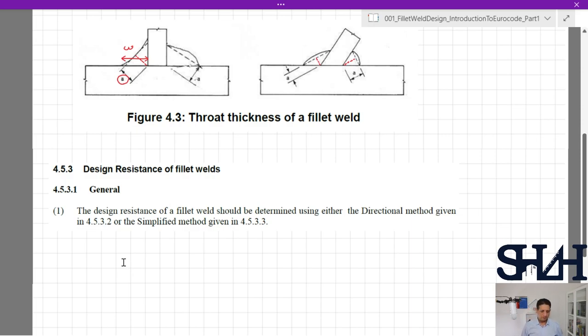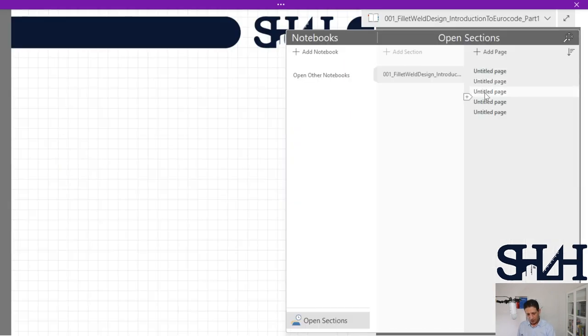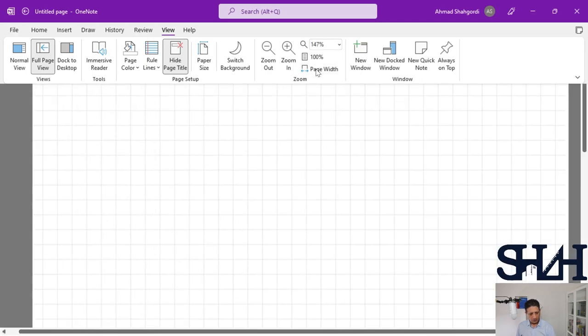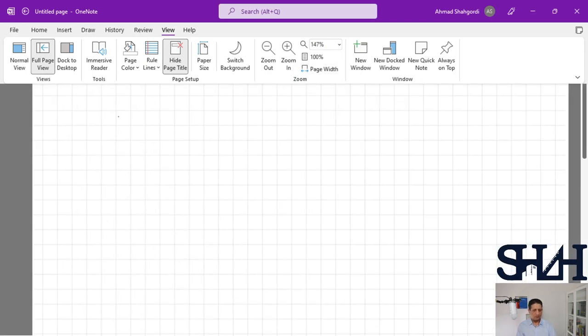In 4.5.3, design resistance of fillet welds, the design resistance of a fillet weld should be determined using either the directional method given in 4.5.3.2 or the simplified method given in 4.5.3.3. So this is the introduction of how to design the fillet welds. But more important note about how to design the fillet weld is how to calculate the properties of a fillet weld.